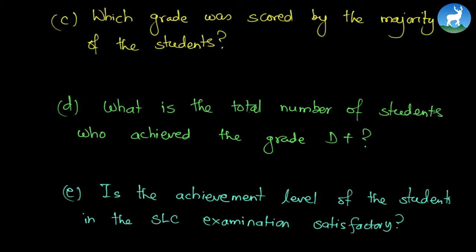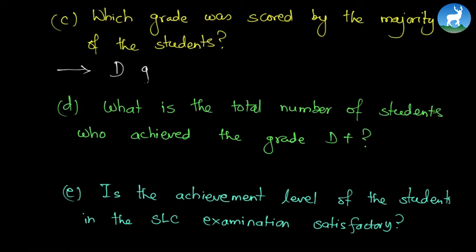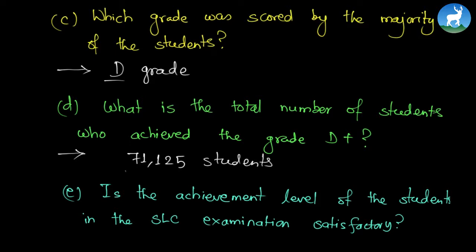Now for the final three questions: which grade was scored by the majority of students? That is D grade — the majority of students obtained D grade, which is not so good. Next: what is the total number of students who achieved grade D+? Going back to the table, that is 71,125 students who got grade D+.